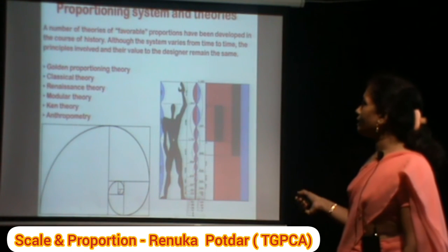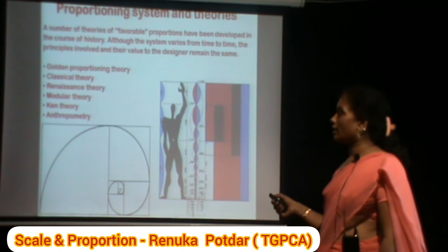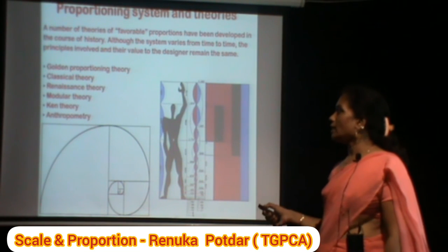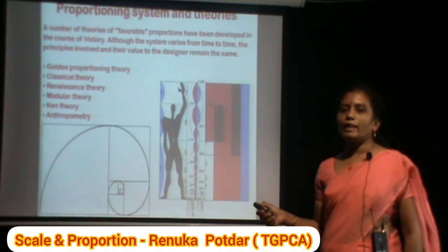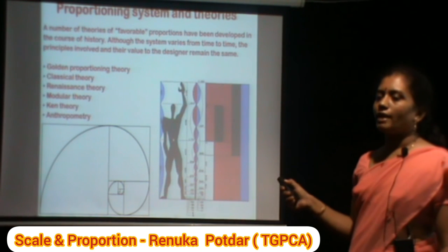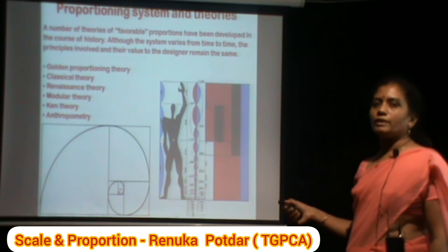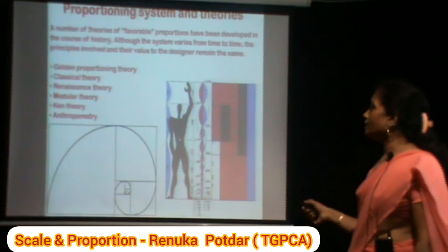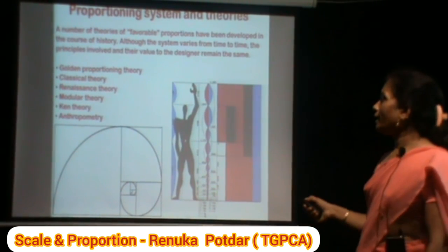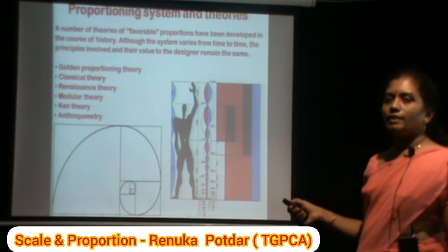Proportion theory has a history with certain well-known theories described by great authors. These are: the Golden Proportion Theory, Classical Theory, Renaissance Theory, Modular Theory, Kane Theory, and Anthropometric Theory. Anthropometry relates to the human figure. The Golden Proportion Theory originated with the Greeks; Classical Theory also relates to Greek and Roman style; Modular Theory was developed by Le Corbusier; and Kane Theory comes from China. These theories will be discussed in another class.